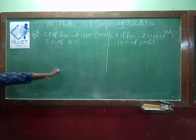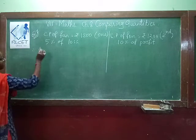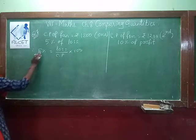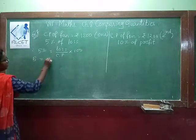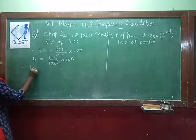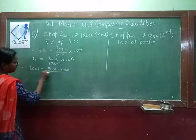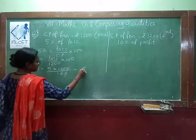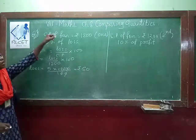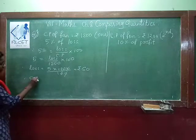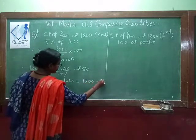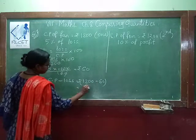For 5% loss: Loss in Rs. = 5 × Rs.1200 ÷ 100 = Rs.60. So the loss is Rs.60. Since cost price is Rs.1200, selling price = cost price − loss = Rs.1200 − Rs.60 = Rs.1140.